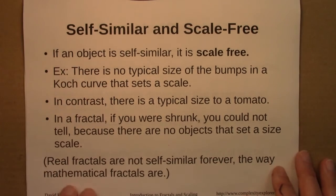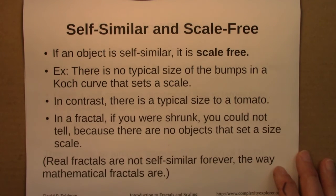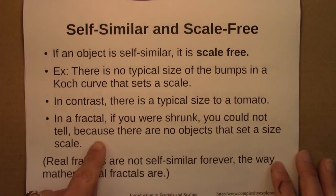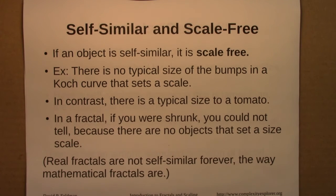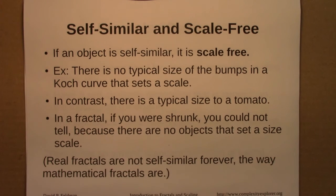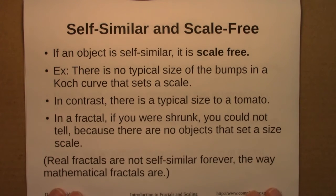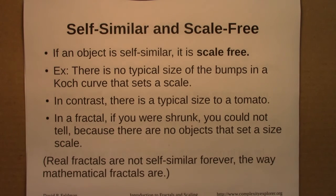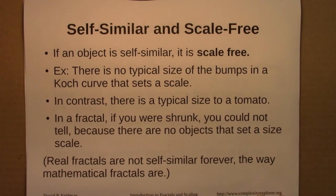I also talked about the notion of something being scale-free. If an object is self-similar, we often say it's scale-free. For the Koch curve, there's no typical size of the bumps — it's a line with a bump, on which there are bumps, on which there are bumps of all different sizes. In contrast, there is a typical size to a tomato — roughly a pound. If I put a tomato next to an unknown object, you'd have an idea of its size. But if I showed you just a segment of the Koch curve, that wouldn't help, because you could be looking at a small piece or a large piece — they all look the same. In a fractal, if you were shrunk by a factor of 10, you could not tell, because there are no objects that set a scale or a size.